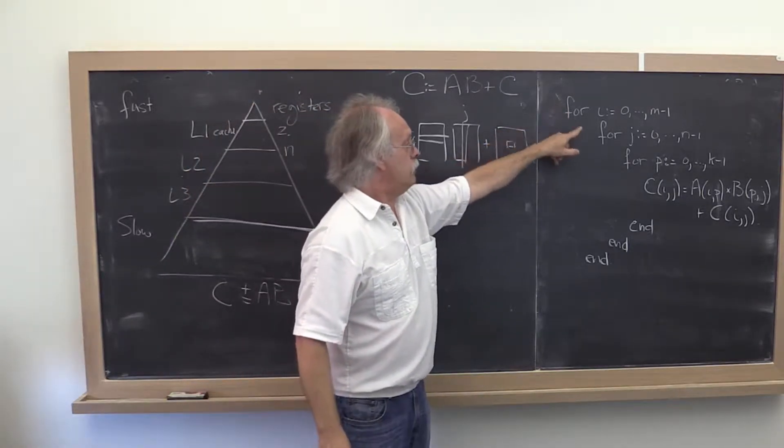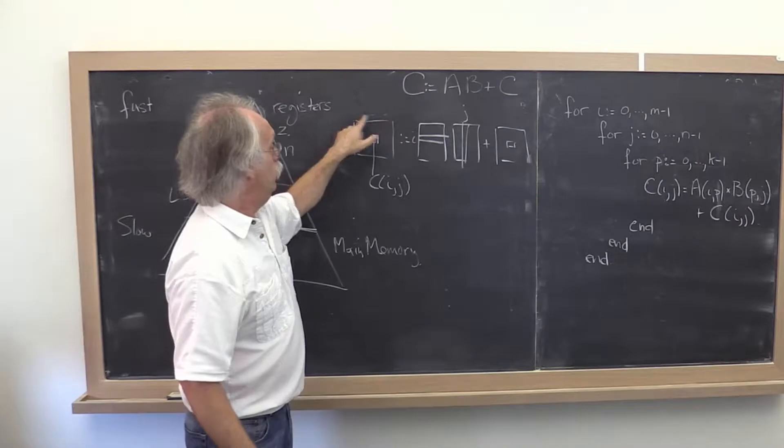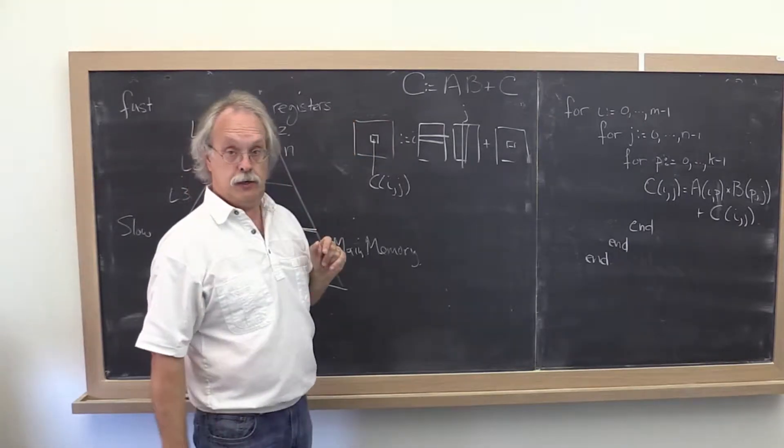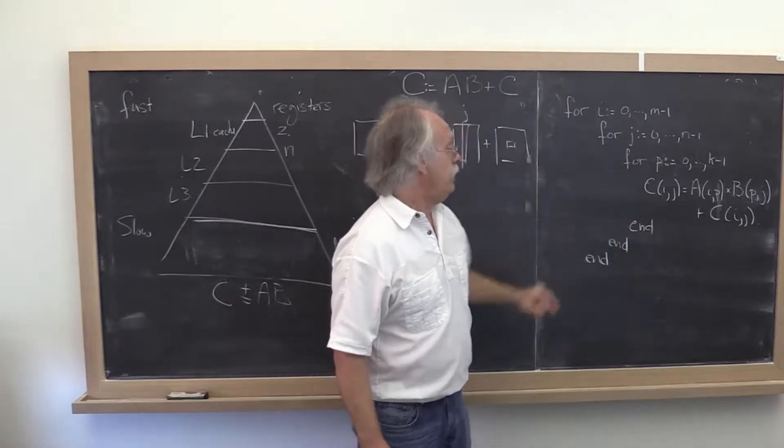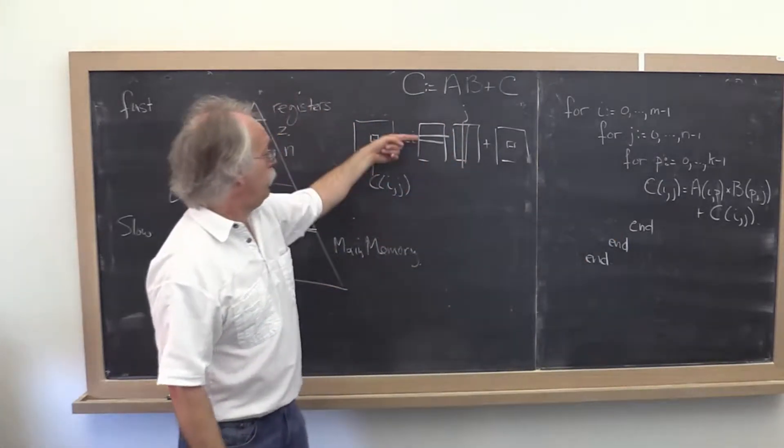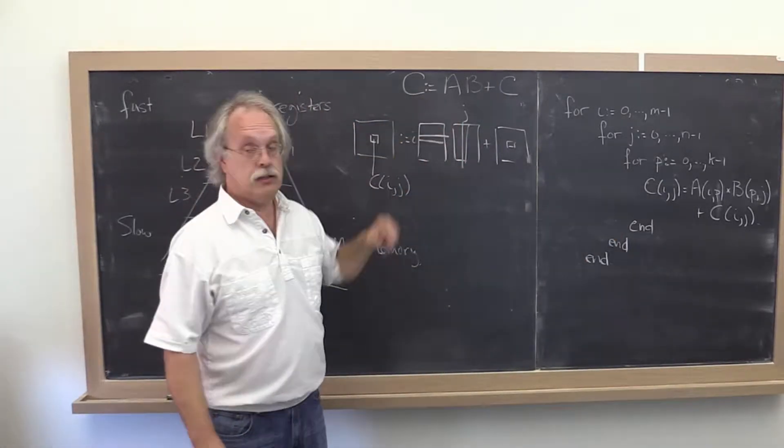These two loops here loop over all of the entries in matrix C. And then this loop right here, what we call the innermost loop, performs the dot product.